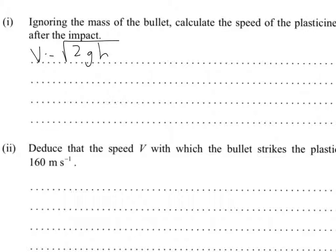So it says, ignoring the mass of the bullet. So plugging in values, you get velocity is equal to the square root of 2 times g, which is 10 meters per second squared, times height, which is 24 centimeters. So you get a velocity of approximately 2.2 meters per second.